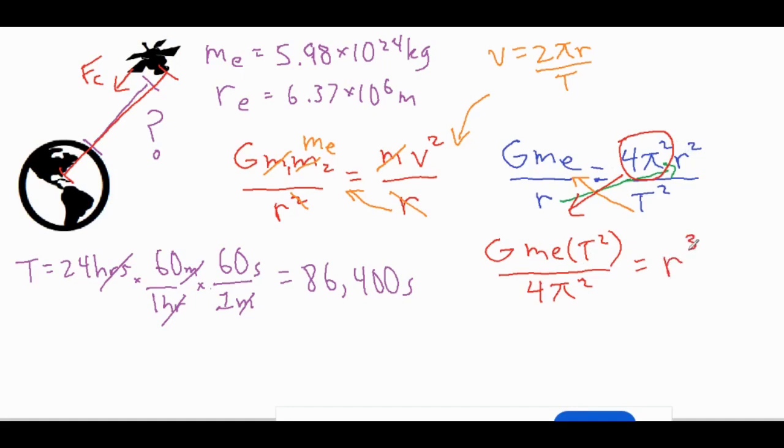And then because the r flipped up next to the r squared it's actually r cubed. So let's go ahead and plug in all of our number values and see what we get for our radius.